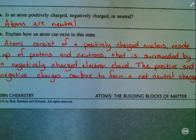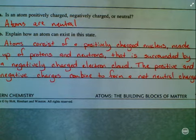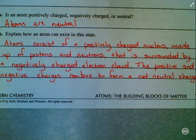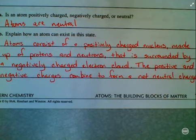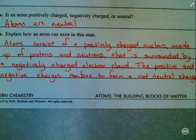they combine to form a net neutral charge, meaning they balance each other out. The magnitude of the negative charge is the same as the magnitude of the positive charge, and so there's no net charge — atoms are neutral.